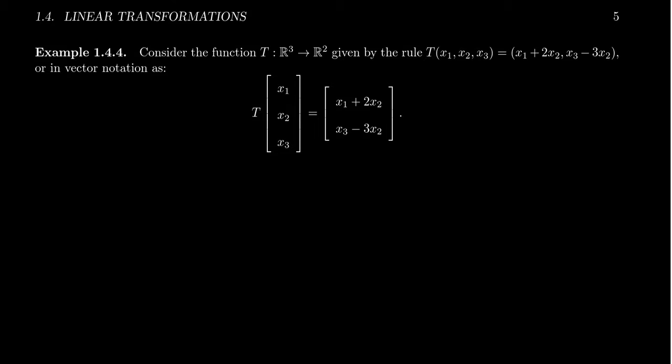So in the previous video, we considered the following linear transformation. T is a map from R3 to R2 that follows the following rule: T of x1, x2, x3 maps to x1 plus 2x2, x3 minus 3x2. And the question I want to ask is, how does one compute the kernel of T? What is the kernel of this linear transformation?